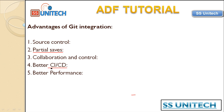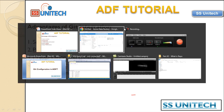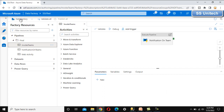The fourth advantage is better CI/CD — continuous integration and continuous deployment — which we will cover in upcoming videos. Git makes it very easy to deploy into multiple environments using CI/CD. The fifth advantage is better performance: according to Microsoft, it is 10 times faster than the ADF service directly, which is a significant improvement. These are the major advantages of using Git configuration.